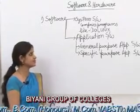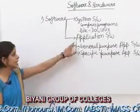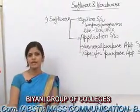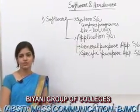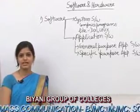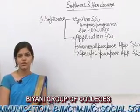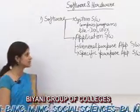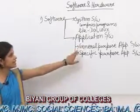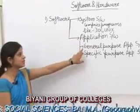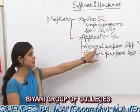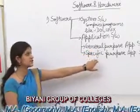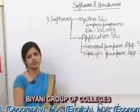Second is application software. Application software is a collection of application programs, and an application program is one that is developed to solve a specific task. Application software has two types: first is general purpose application software, second is specific purpose application software.